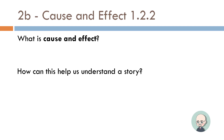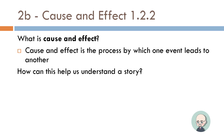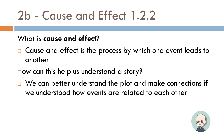We're back. We're going to talk a little bit about cause and effect, which relates a little bit to plot, but it's a very important concept for understanding texts. So first off, what is cause and effect? You might have heard this phrase. Cause and effect is the process by which one event leads to another. But how can this help us understand a story? We can better understand the plot and make connections if we understand how events are related to each other — one thing happens because another thing in the past happened.